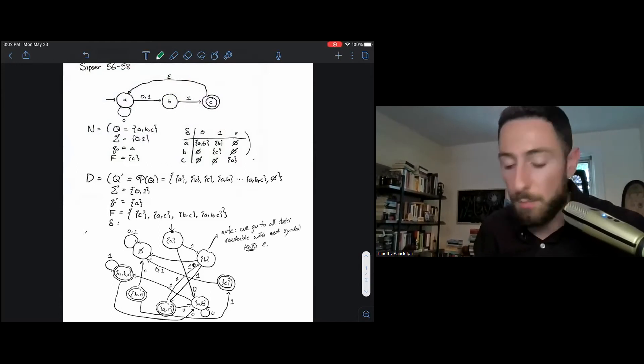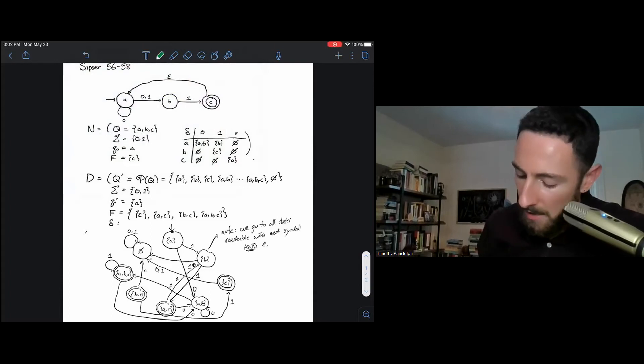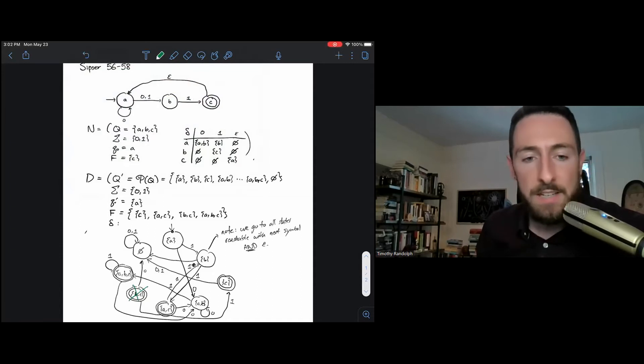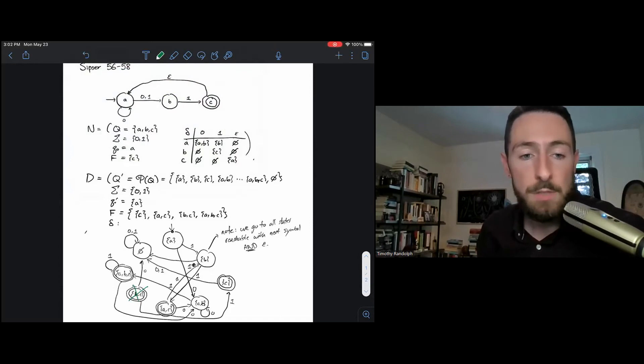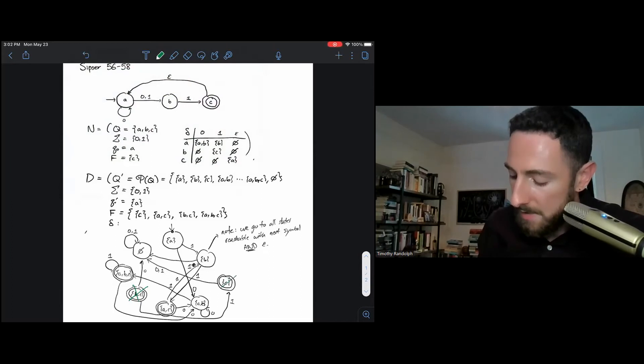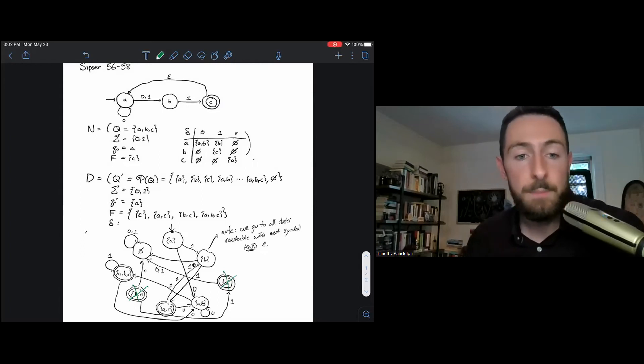If I even wanted to simplify this a little bit more, I might note, hey, this B, C state here, there's no way to get to it. It only has out arrows, so it's redundant. It's not actually an important part of this DFA. Similarly, once I've nixed the B, C state, there's no way to get to this C state, so I can cross that out as well. And the remaining six states and their transitions should be a DFA that do the same thing as my NFA.